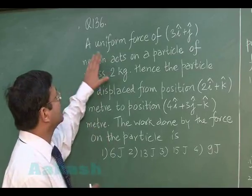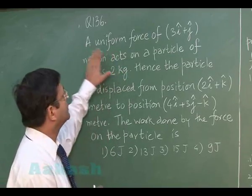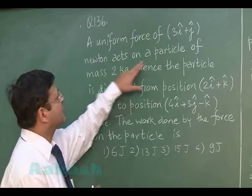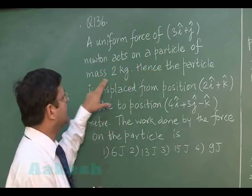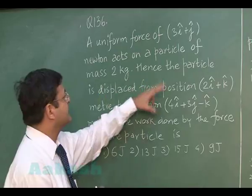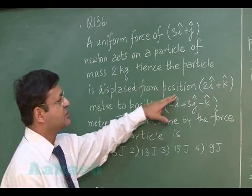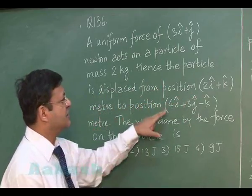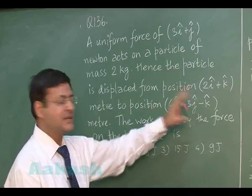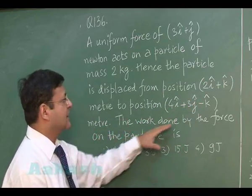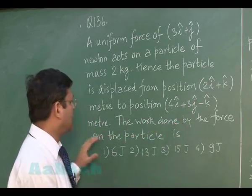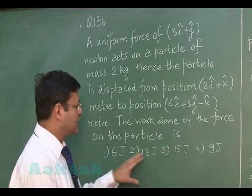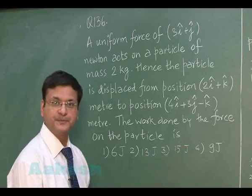Question 136 says: a uniform force of 3i + j Newton acts on a particle of mass 2 kg. The particle is displaced from position 2i + k meter to position 4i + 3j − k meter. The work done by the force on the particle is — choices are 6 joule, 13 joule, 15 joule, and 9 joule.